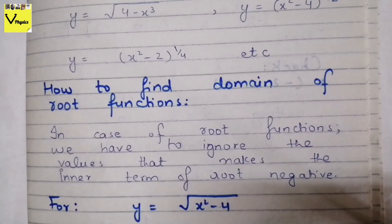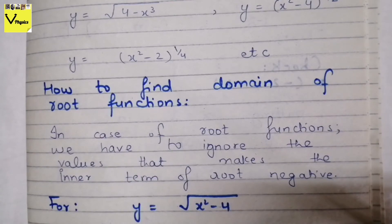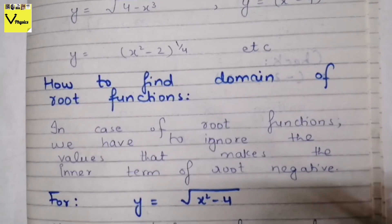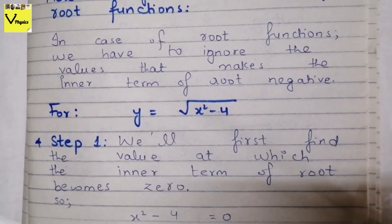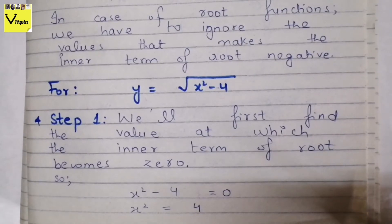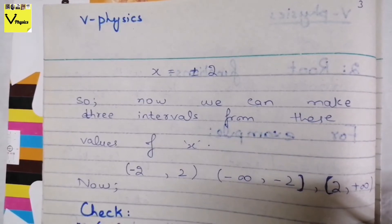For example, we have the function y = √(x² − 4). How do we calculate its domain? The first step is to set the inner term equal to zero: x² − 4 = 0, to find out which values of x make the inner term zero. So x² − 4 = 0 gives x² = 4, and x = ±2. From these values of x, we can generate three kinds of intervals: one interval from −2 to +2, a second interval from −∞ to −2, and a third from 2 to +∞.